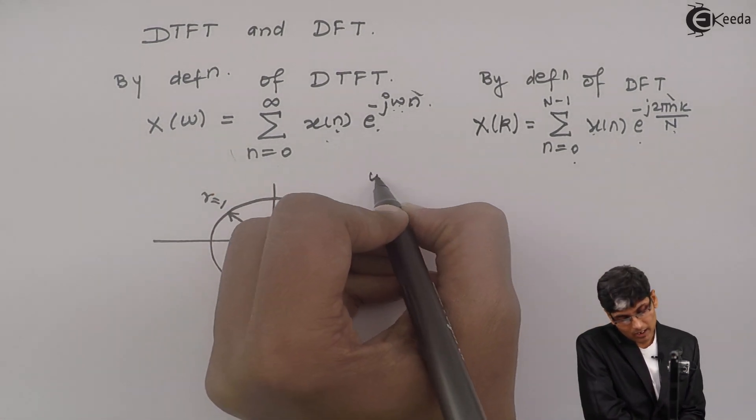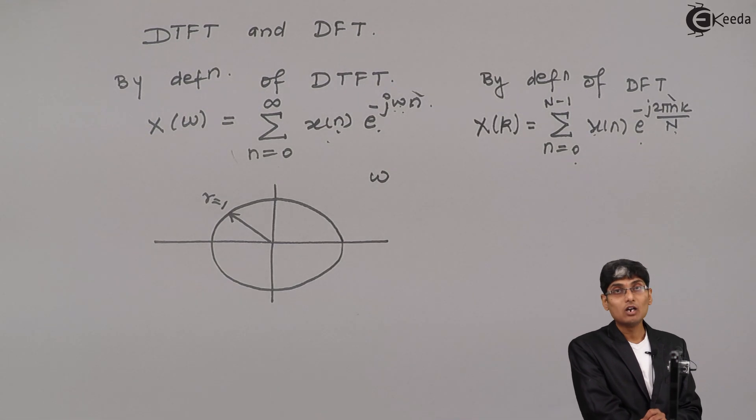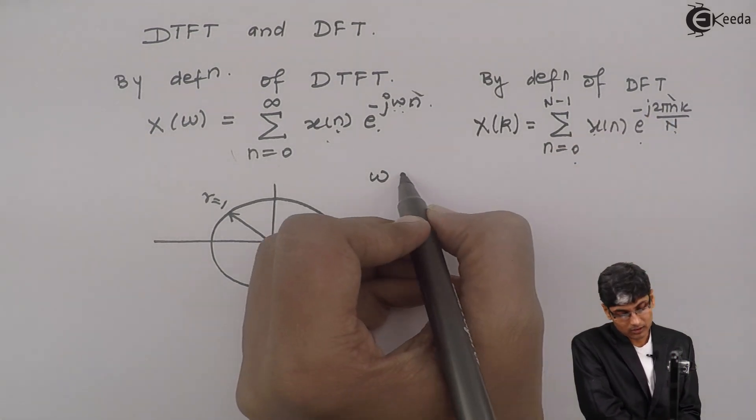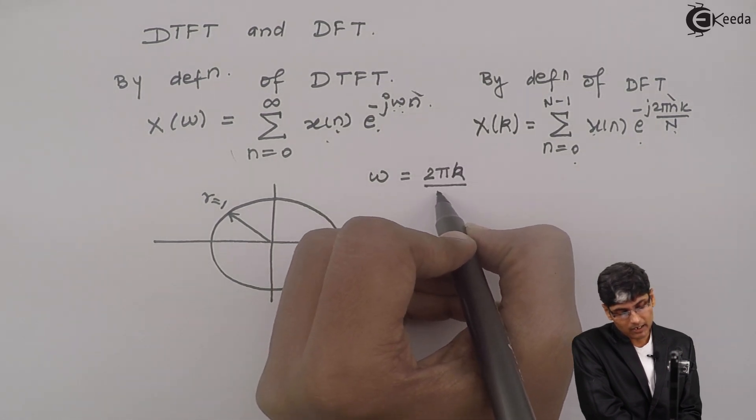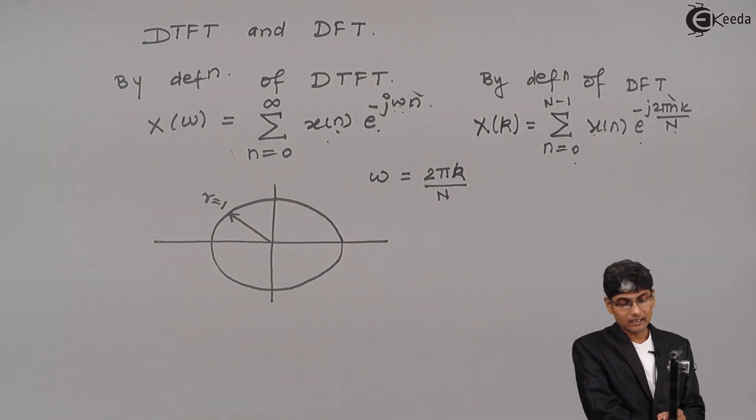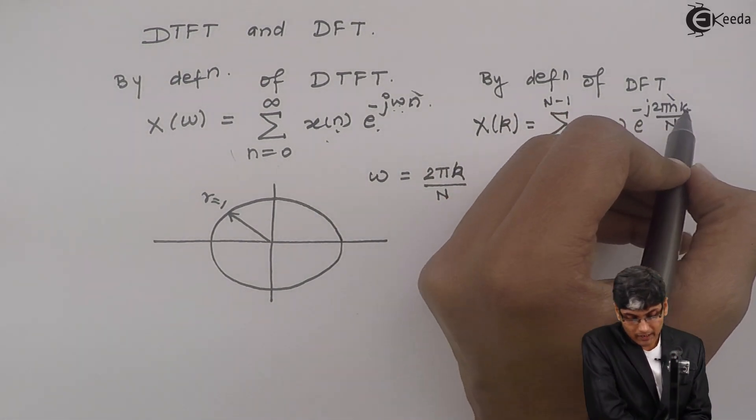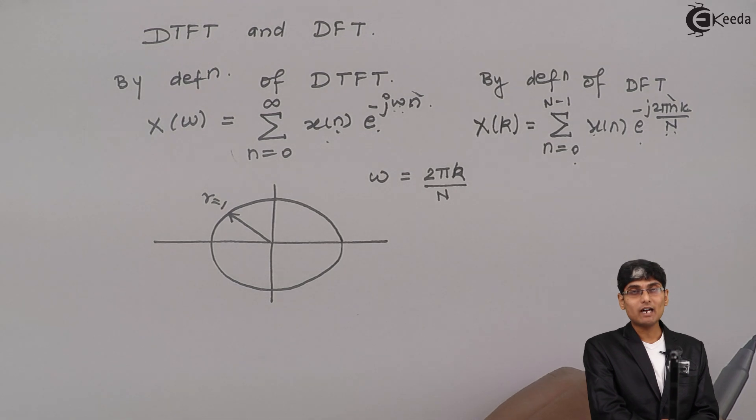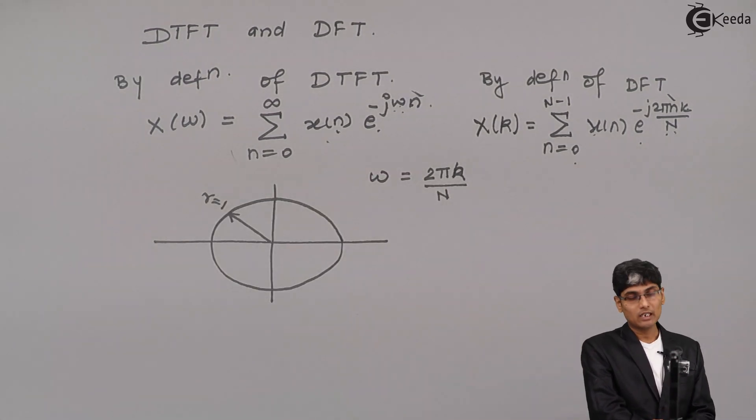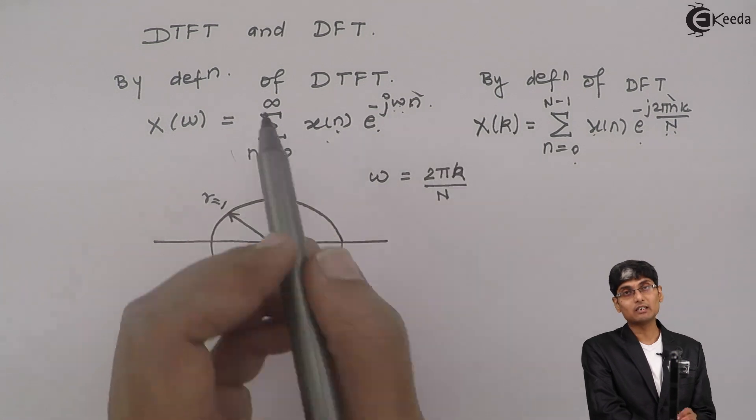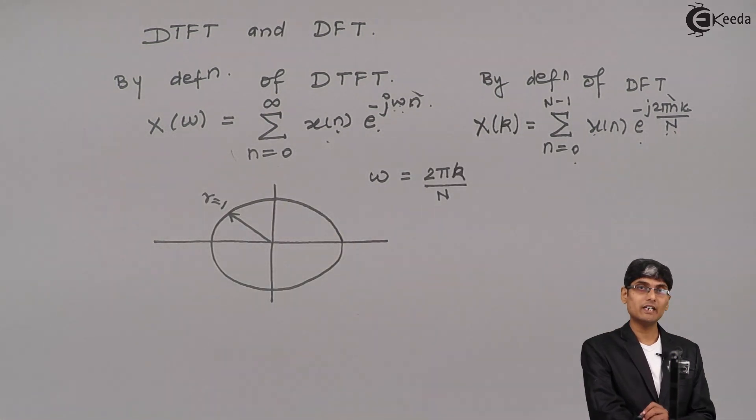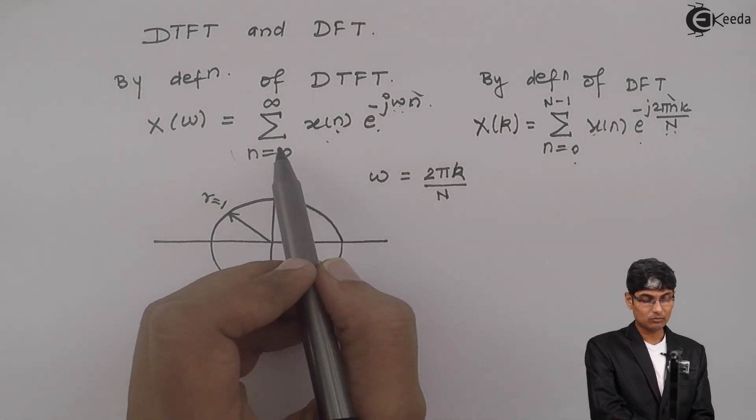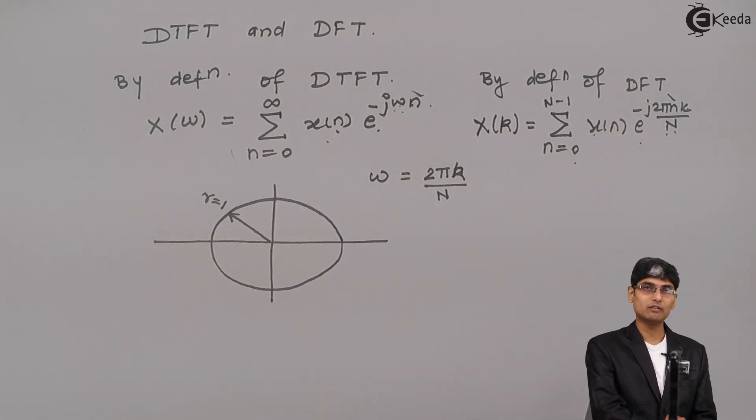If I see what comes out from the DFT formula, omega from DTFT corresponds to 2πk/N. That 2πk/N is equivalent or equal to omega. If I put that, I will get the same thing as what DFT gives, provided my n should be restricted to N-1, not infinity.